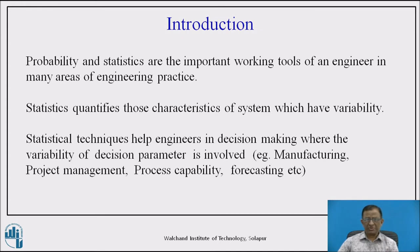For example, in any manufacturing setup, the parts produced cannot have identical dimensions. The dimensions of all parts produced on a single setup or manufacturing system always vary within a certain limit — that is the variability produced. In such cases, variability analysis becomes important to either accept or reject based on quality. That is how statistical techniques help the engineer.